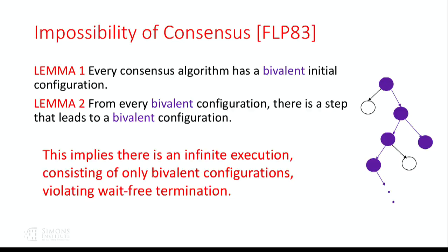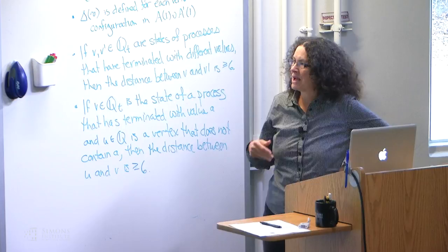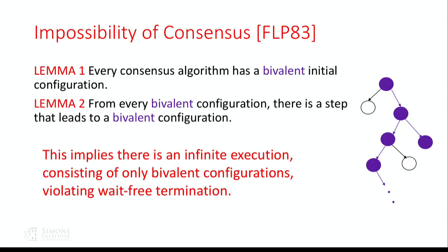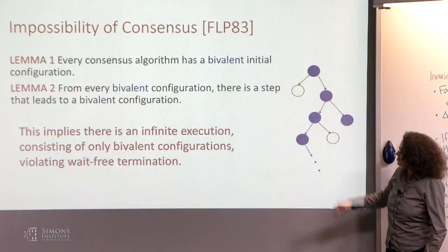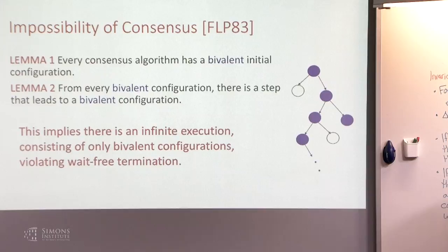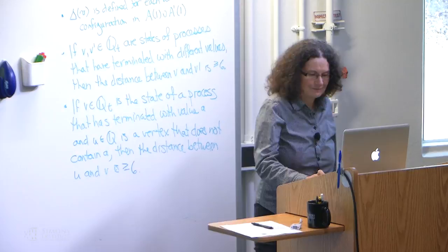The proof works by establishing two lemmas. First, every consensus algorithm has a bivalent initial configuration. Second, from every bivalent configuration, there's a step that leads to another bivalent configuration. In a bivalent configuration, no process can have terminated. Putting these two lemmas together implies there's an infinite execution consisting of only bivalent configurations, which violates wait-freedom. We call such a proof extension-based.